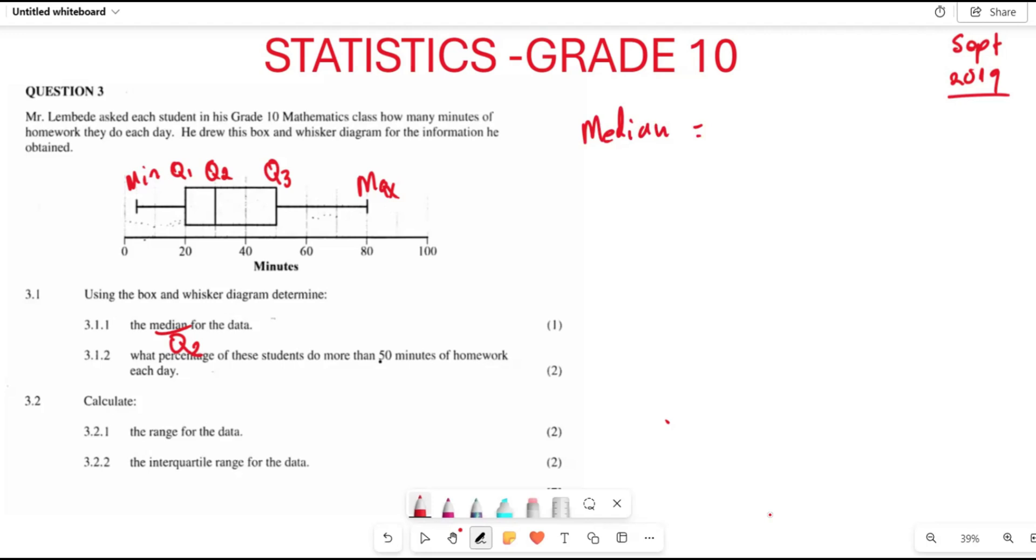In this case, your median is found between 20 and 40, which is going to be close to 30. So basically, that is your median. Now 3.1.2 is asking what percentage of the students do more than 50 minutes of homework each day.